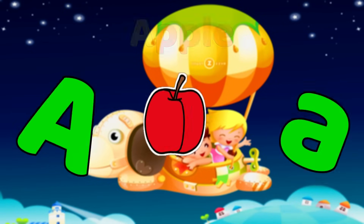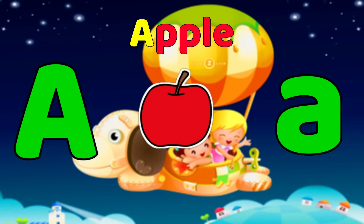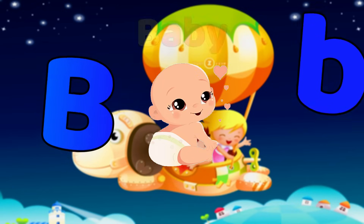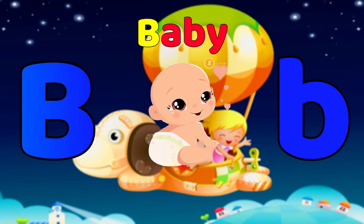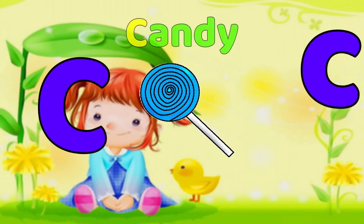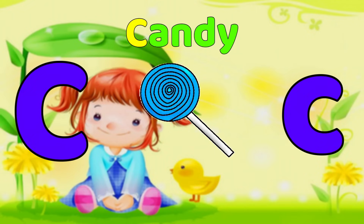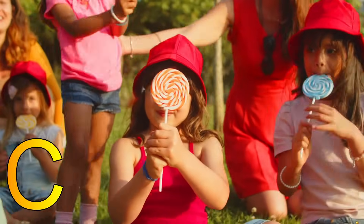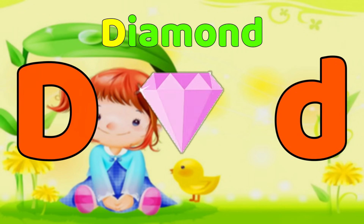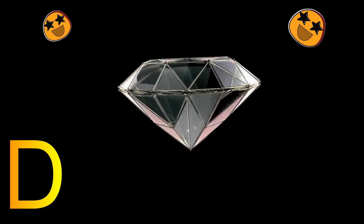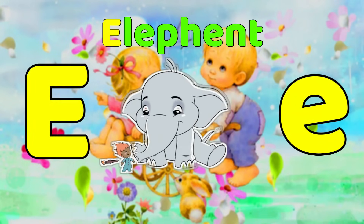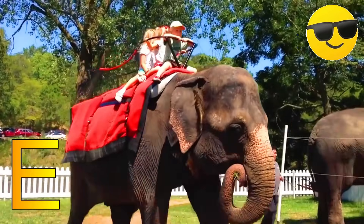A is for Apple. I-I-Apple. B is for Baby. B-B-Baby. C is for Candy. C-C-Candy. D is for Diamond. D-D-Diamond. E is for Elephant. E-E-Elephant.